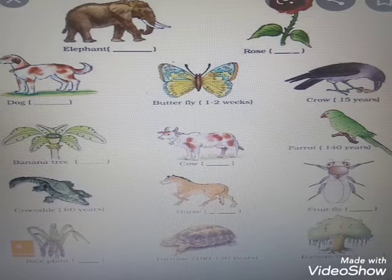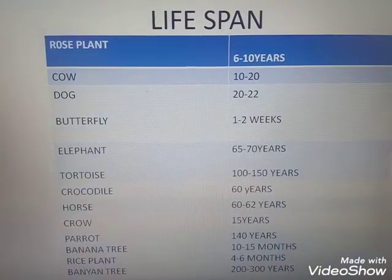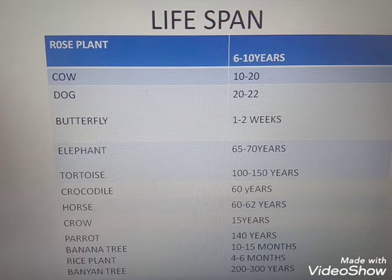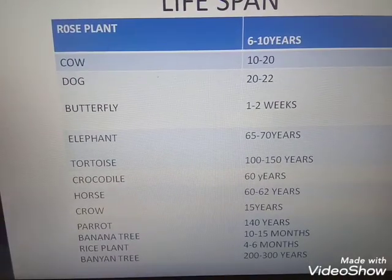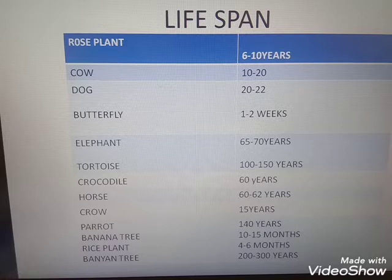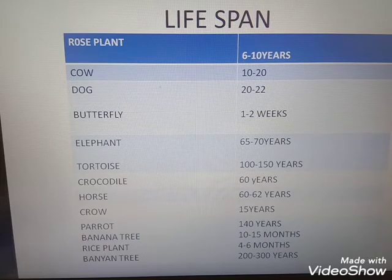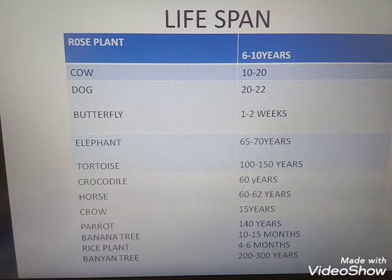Organisms have different lifespans. Lifespan is the period between the birth and the natural death of an organism. Listed lifespans: rose plant 6–10 years, cow 10–20 years, dog 20–22 years, butterfly 1–2 weeks, elephant 65–70 years, tortoise 100–150 years, crocodile 60 years, horse 60–62 years, crow 15 years, parrot 140 years, banana tree 10–15 months, rice plant 4–6 months, banyan tree 200–300 years.